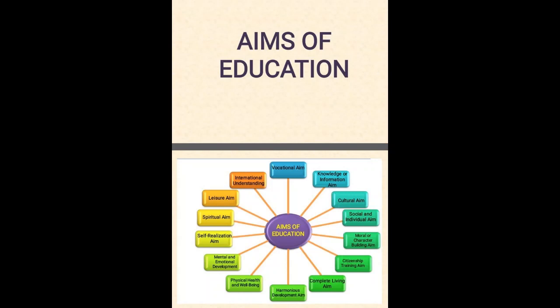Now we will see the steps of the cognitive domain. The steps are: Knowledge, Comprehension, Application, Analysis, Synthesis, and Evaluation. Then the psychomotor domain steps are: Perception, Set, Guided response, Mechanism, Complex overt response, Adaptation, and Origination. Then we will see the affective domain and their steps: Receiving, Responding, Valuing, Organization, and Characterization.